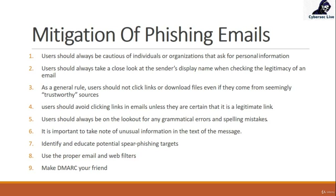Eighth: use proper email and web filters — that is very important. Ninth: make DMARC your friend. We have already discussed DMARC previously. Under DMARC there is DKIM and SPF. These are the things you can use to mitigate phishing emails. I hope I was very clear with that. Bye bye, take care.